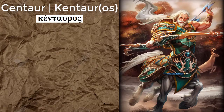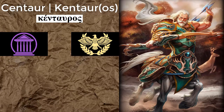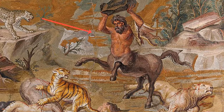The centaur, or kentaur, is a mythological creature that is primarily found in Greek as well as Roman mythology. The centaur is a hybrid creature defined by having the upper body of a man and the lower body as well as legs of a horse.